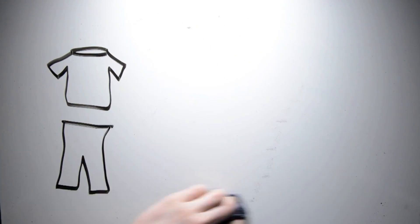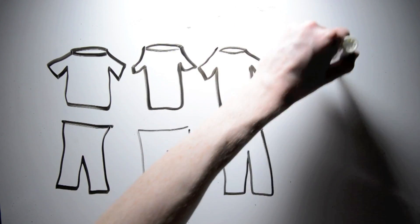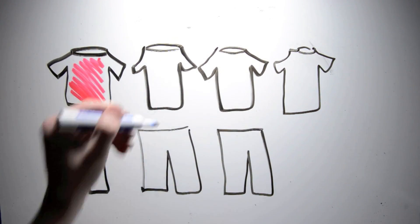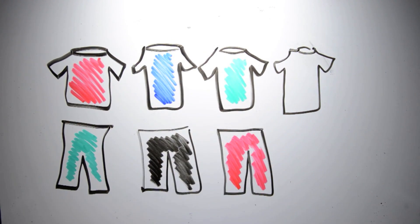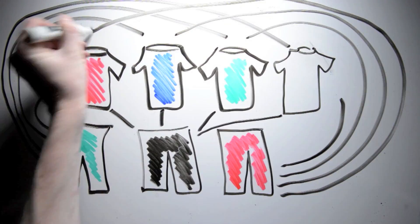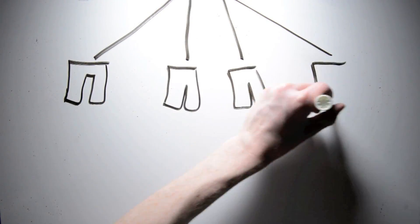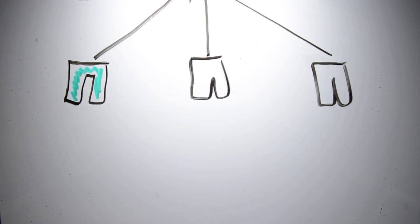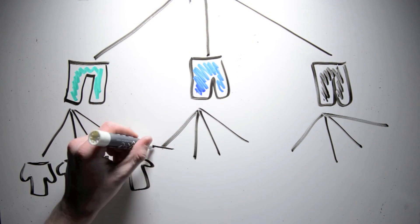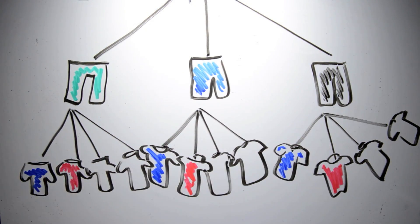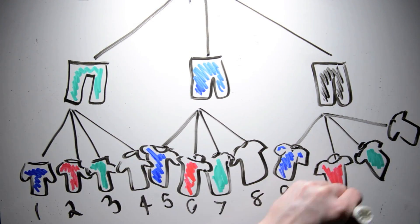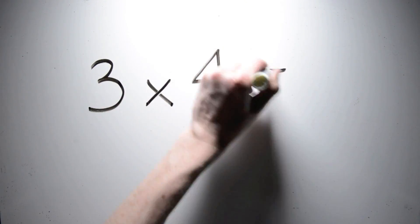Let's say, for example, I have three pants and four shirts. How many different outfits can I wear? If I put on a pair of pants, then for every different shirt I wear, I have a different outfit. And every time I change my pants, I can wear each shirt again as a new outfit. Using math notation, we can describe this as three times four, which is twelve.